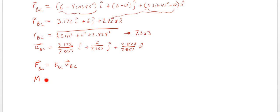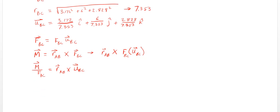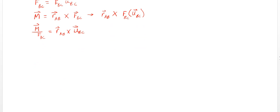And that's our unit vector from B to C. And then our force from B to C equals the magnitude of that force, FBC, times the unit vector BC. Also, our moment, the vector, is going to be RAB cross FBC. And then we can write that also as RAB cross F times UBC.